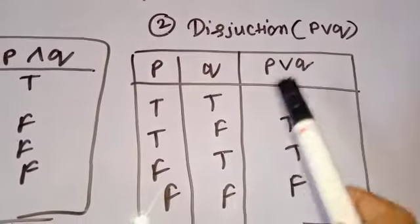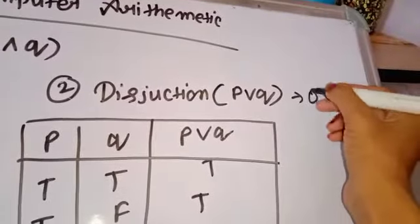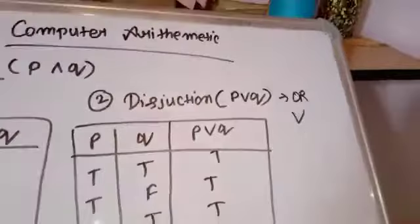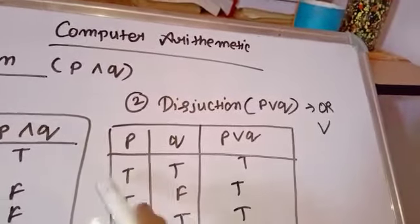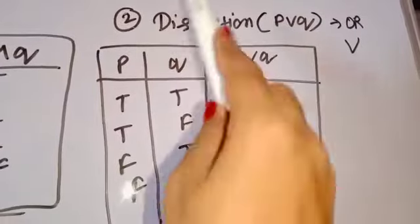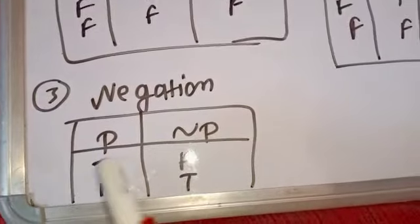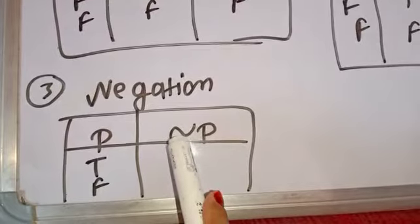Anyone — P and Q, this is the OR sign. OR means either this or that. So if either this is true or that is true, then the result is true, otherwise it is false. Negation means the opposite — if it is true then it is false, and if it is false then it is true. And this is the sign of negation.